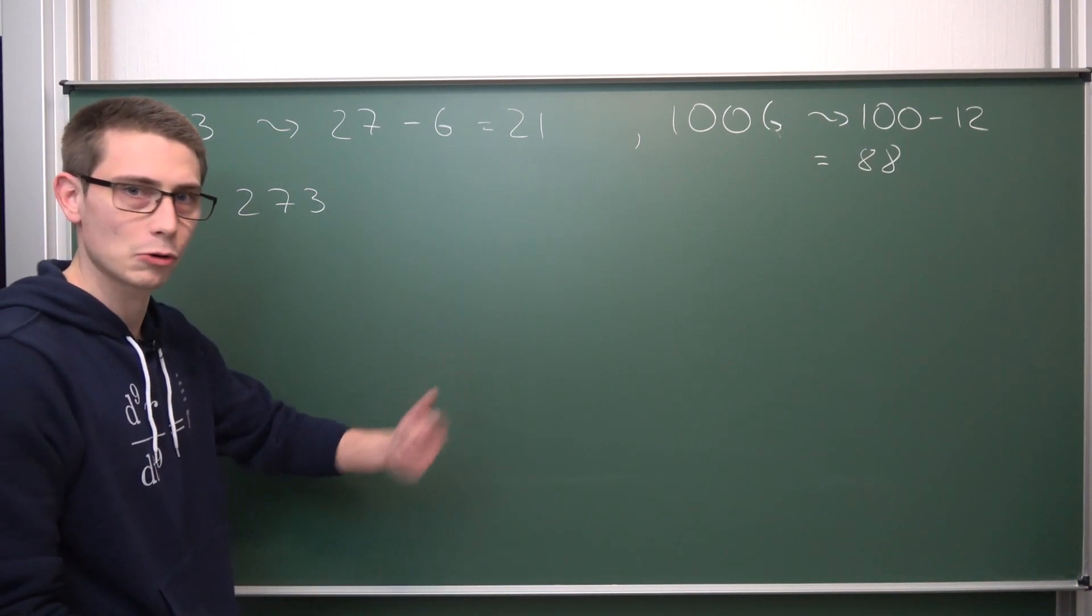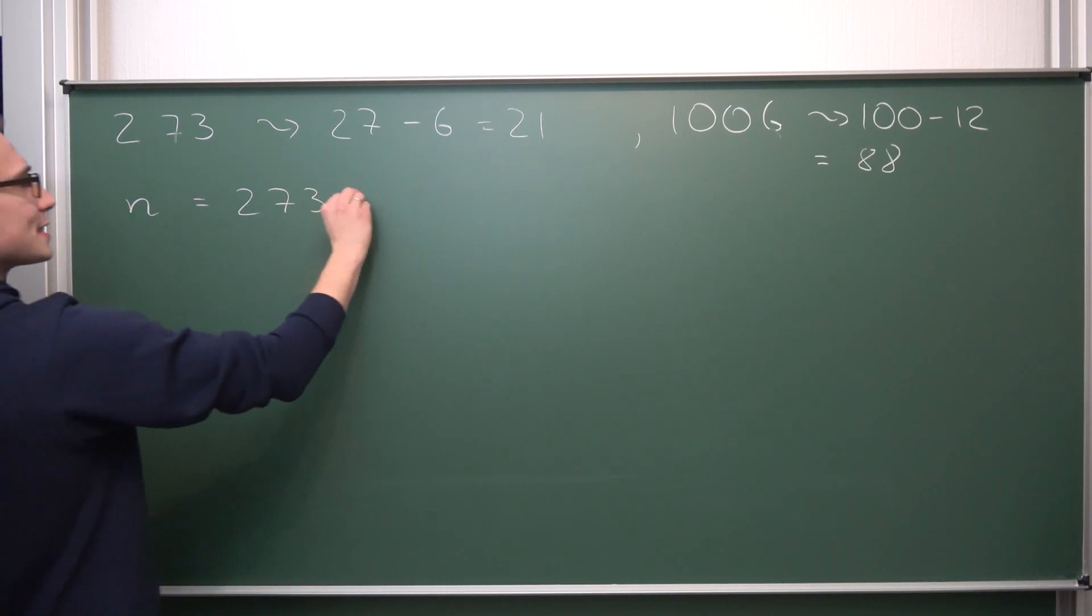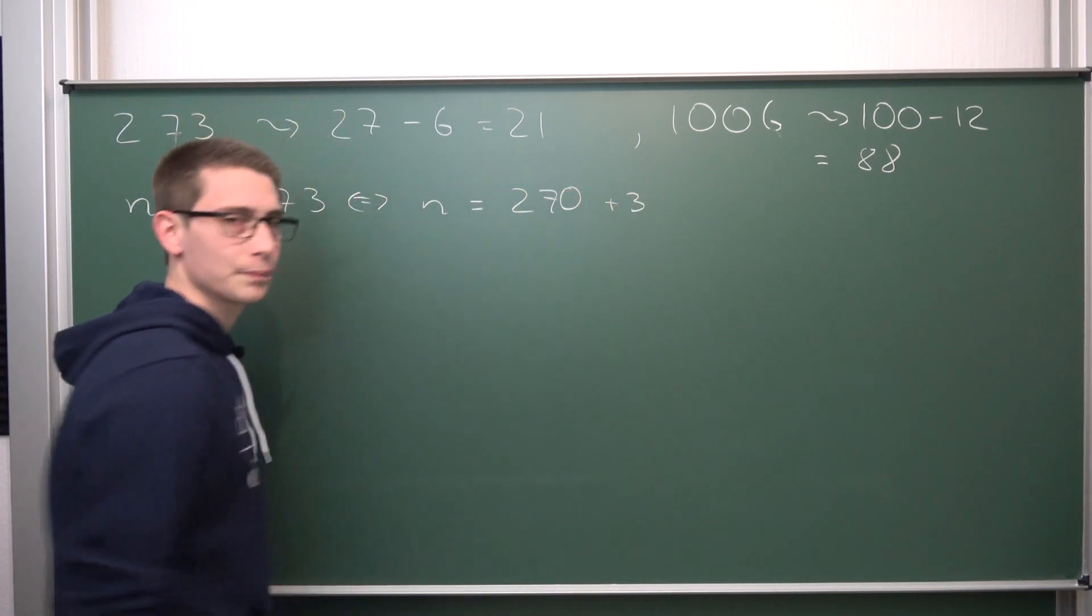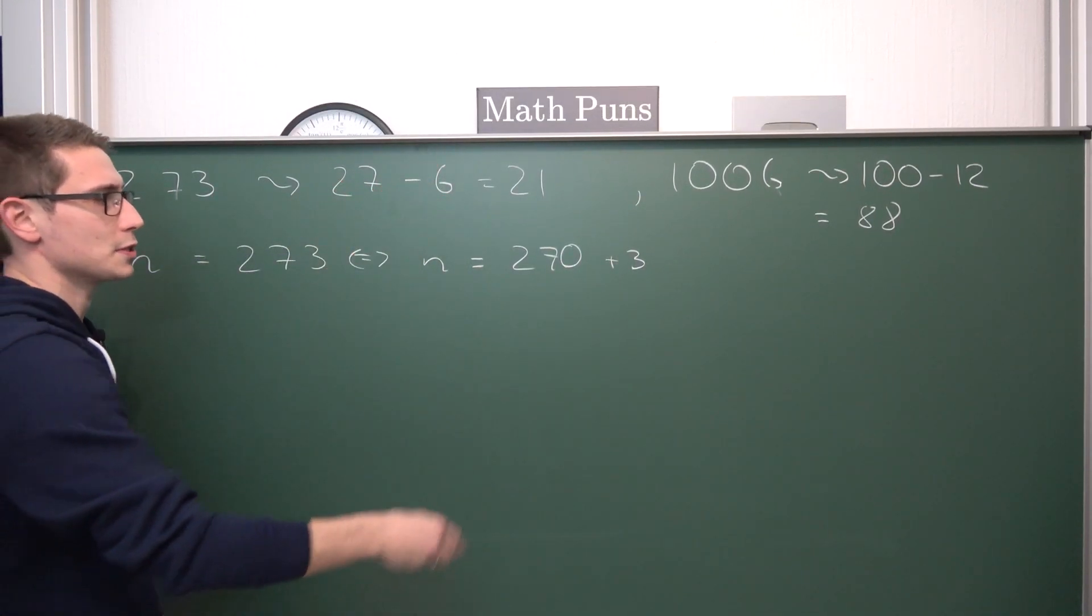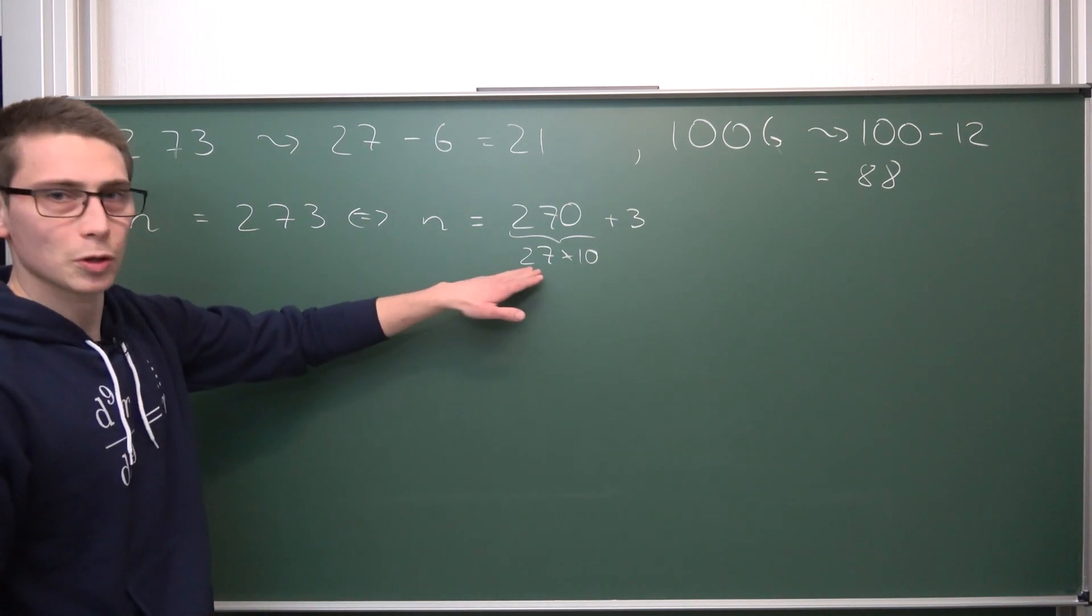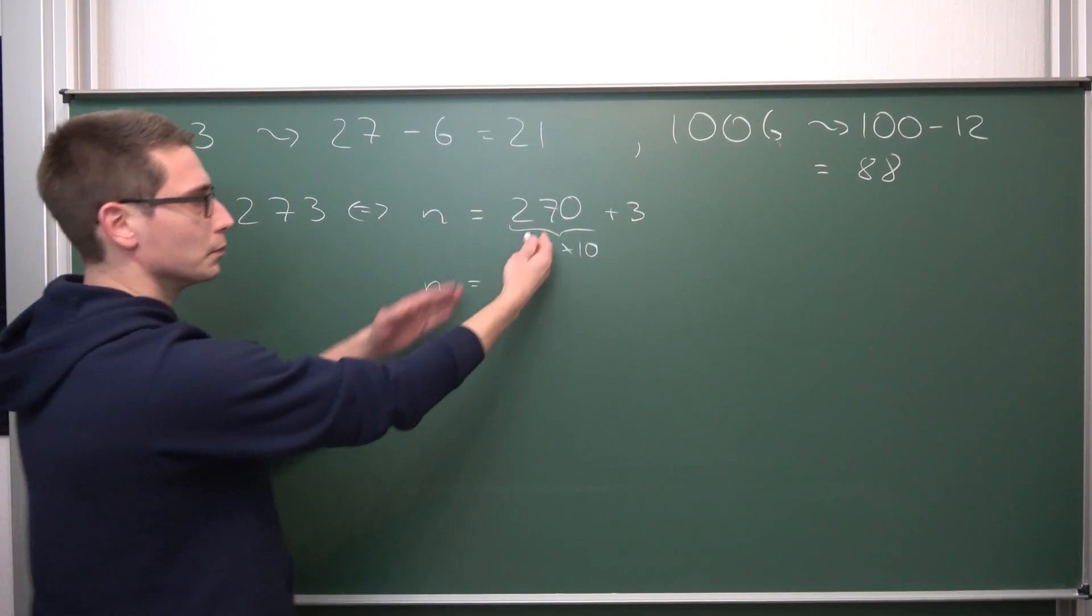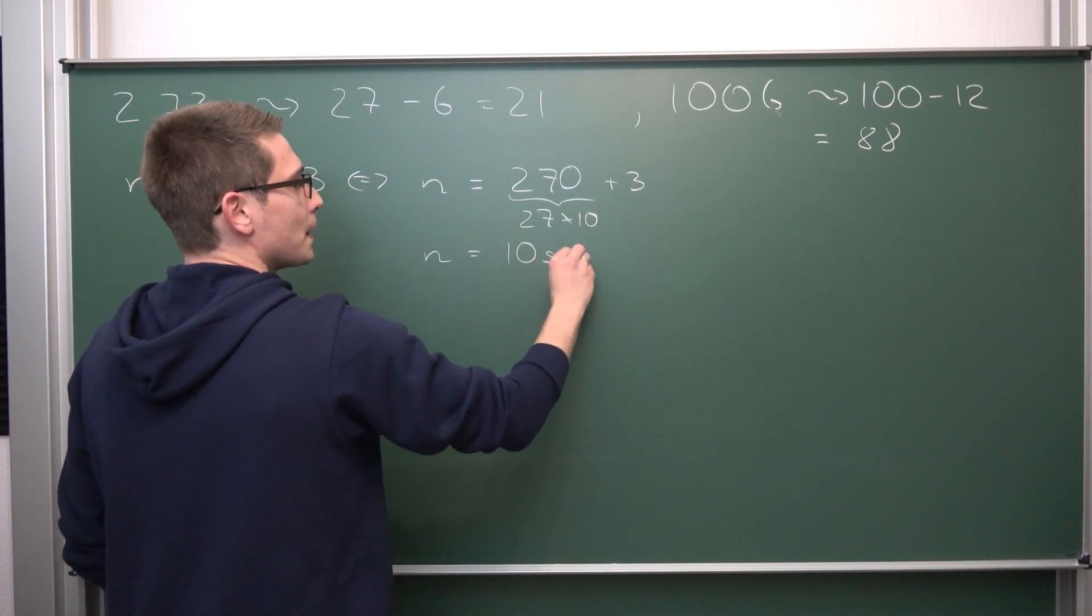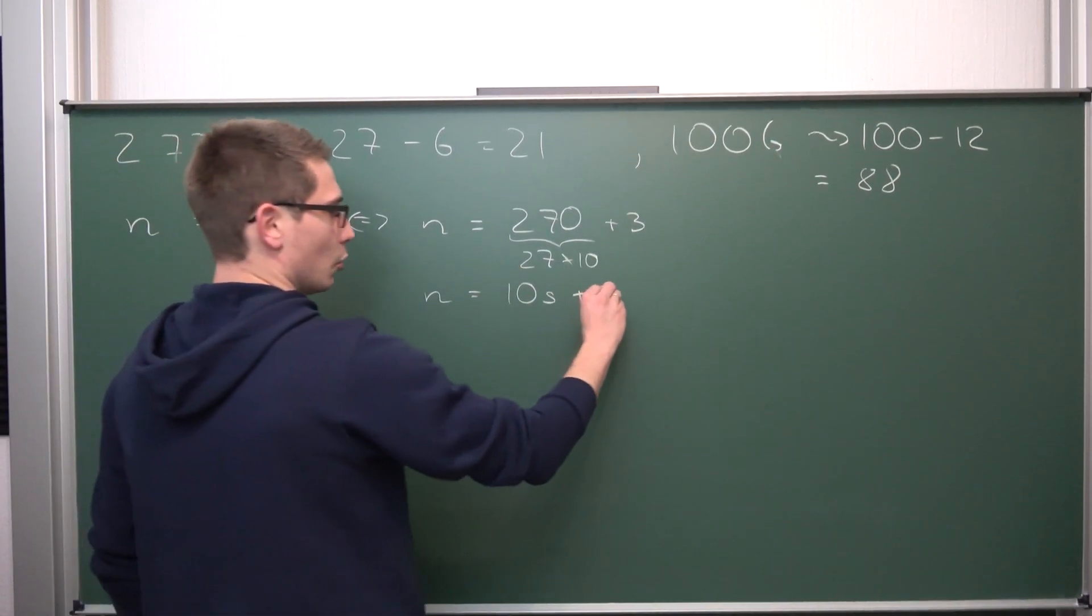What we are going to do now is split this number up. We are going to take away the last digit from it. This is the same as saying n equals 270 plus 3. Remember what our rule stated. The first two numbers are actually 27 times 10, and the whole thing plus 3. Meaning we take our number n and split it up into a part at the front that we multiply with 10, let's say this is 10 times s, and what we are left with is the last digit. Let's call this digit t.